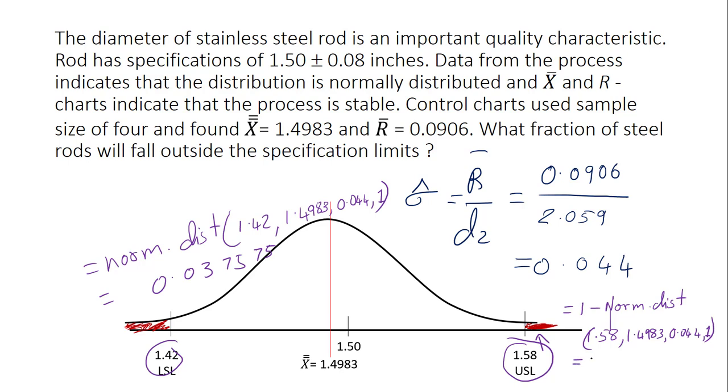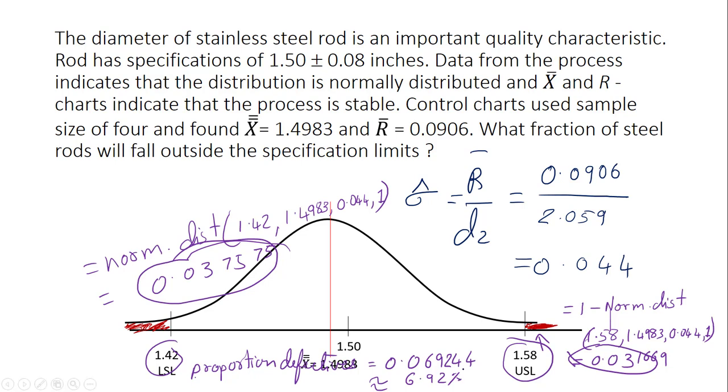Your total fraction, this will be equal to 0.031667. Your total defectives will be the sum of this number as well as this number. That will be equal to the sum of the two numbers, 0.069244 or you can say that 6.92 percent of products are outside the lower and upper specification limits.